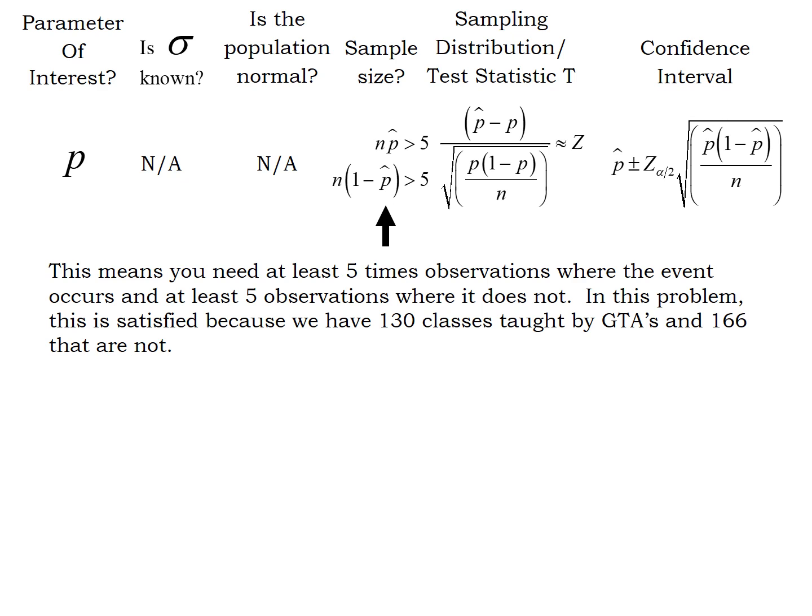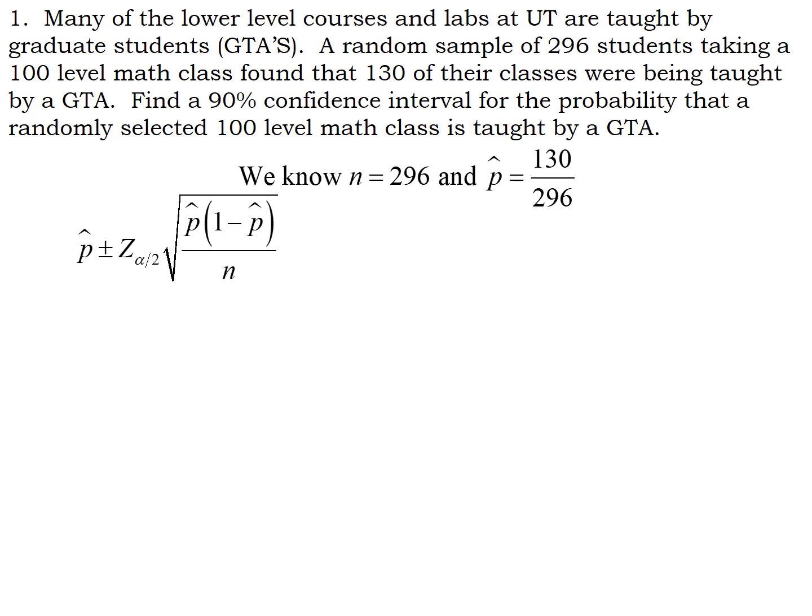Then we have this sampling distribution, right, that's based on a Z score. And then after a little bit of algebra, that yields our confidence interval formula over here on the far right. So this is the formula we're going to use. So we just decided this is the right formula. We know p-hat, we know n. So the only work to do here is to find the right Z score.